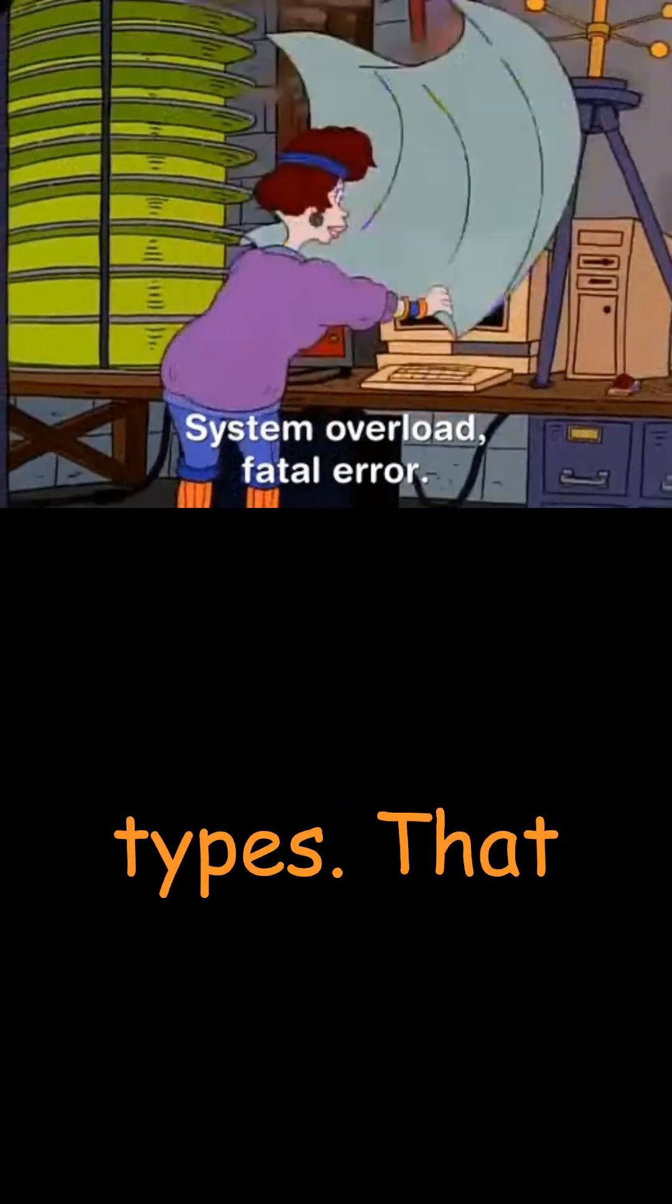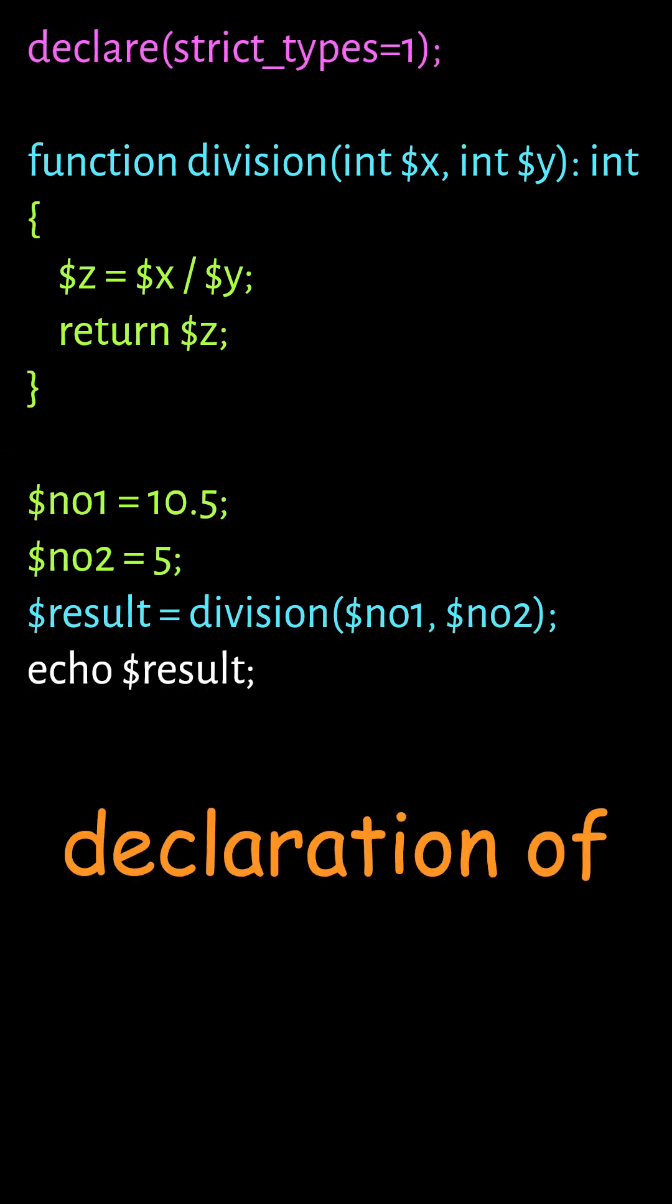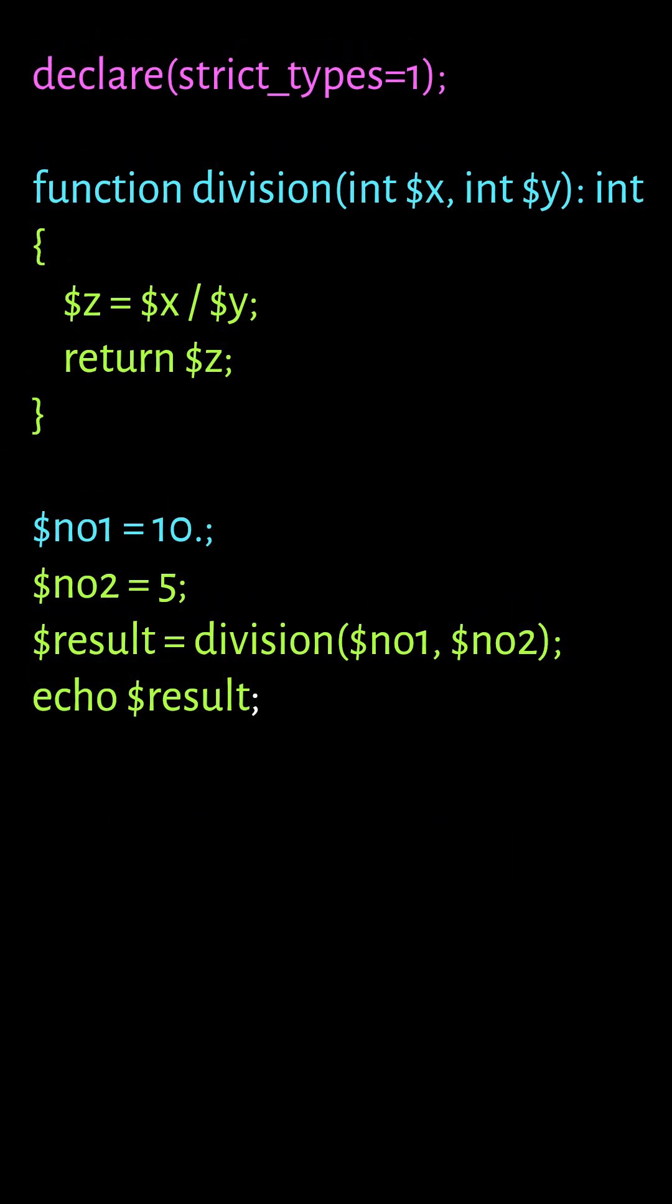As we have strict with the data types, the value of the function return must exactly match with the declaration of the function return type. We can update the value of $no1 to 10 to get the output instead of error.